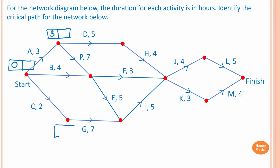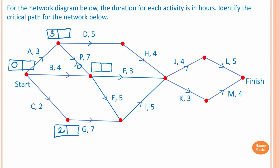To work out the earliest starting time for G: two plus zero equals two. To work out the earliest starting time for F and E: three plus seven is ten, and four plus zero is four. So the earliest starting time for F or E is ten hours. In forward scanning, we take the largest value.